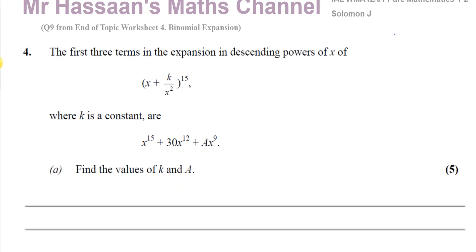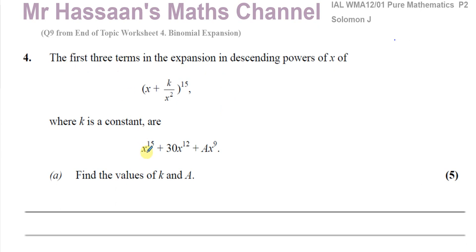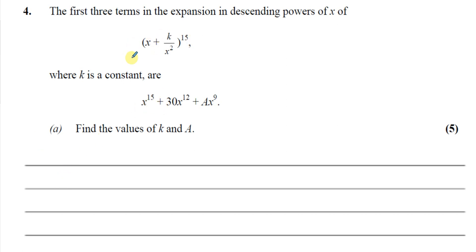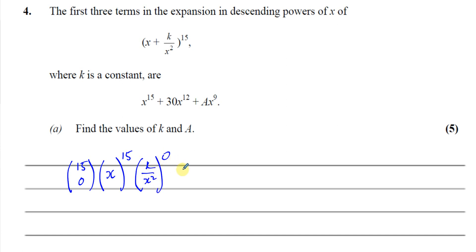So now let's get started. It says the first three terms in descending powers of x. If we set up our binomial expansion, the first term is going to be x to the power of 15. It's given by 15C0 times x to the power of 15 times (k/x²) to the power of 0. Since 15C0 is 1, x^15 is x^15, and anything to the power of 0 is 1, we get x^15 as the first term.